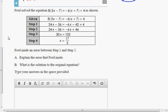Number six says Fred solved this equation, and the work is shown here. Fred made an error between steps one and two. So between here and here, it says Fred made an error.